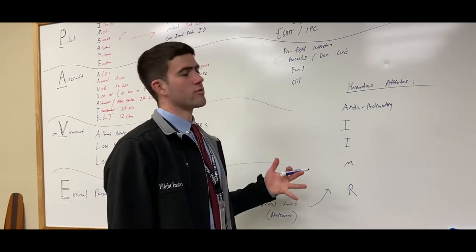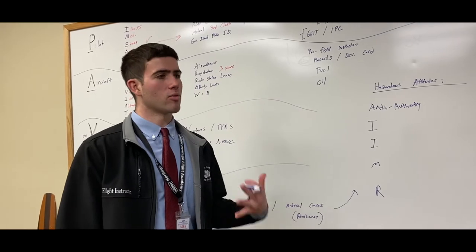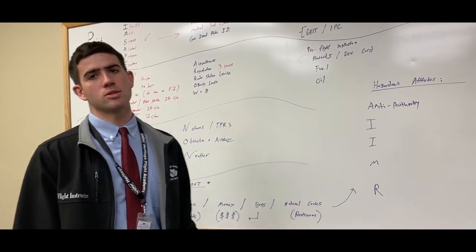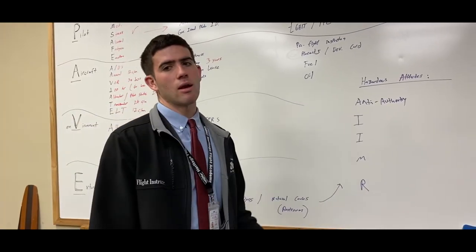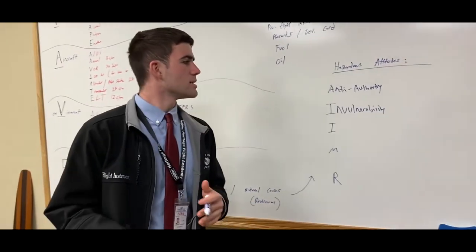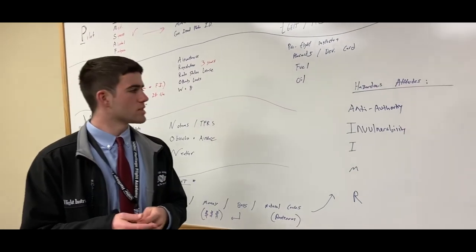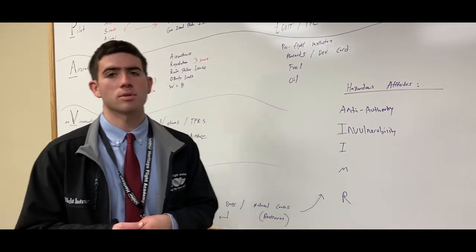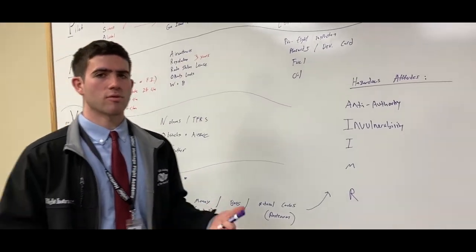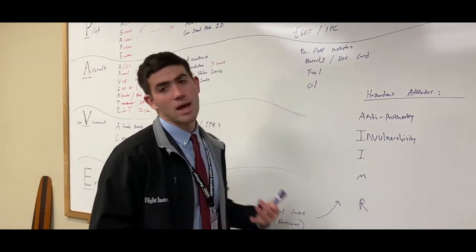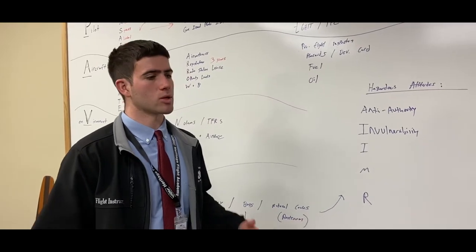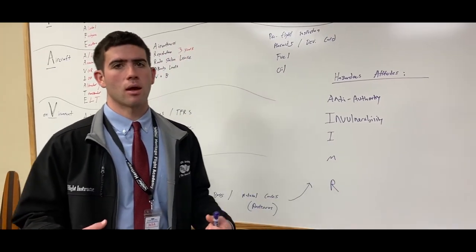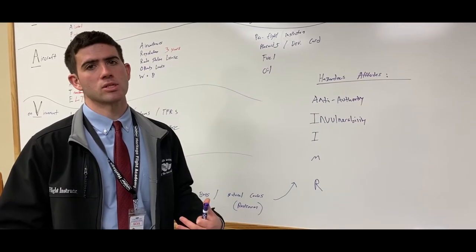So the proper antidote for anti-authority is to follow the rules, they're right and it's the safest option. Again at Heritage we have a safety culture. And invulnerability is the idea of thinking that you're invincible and that it can't happen to you. So the proper antidote for that would be it can happen to me and you want to make sure you are more conservative in how you approach things and in your risk assessment.